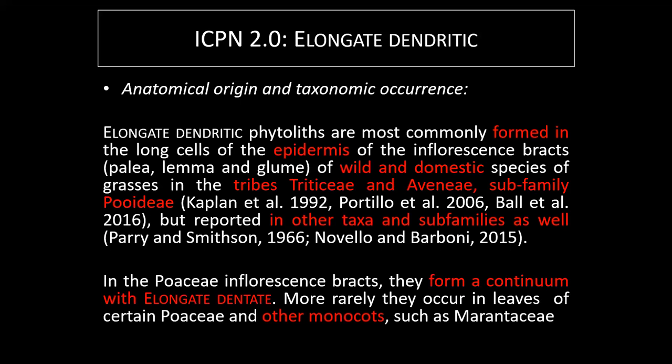The anatomical origin and taxonomic occurrence sections stress a few aspects: where the morphotype is formed, and in which taxa — including wild and domesticated species — it is found. It is reported for the subfamily Pooideae, tribe Avenae, and can also be found in other taxa and subfamilies. We also stress that elongate dendritic within the Pooideae forms a morphological continuum with elongate dentate and sinuate morphotypes. Some other plant families also produce elongate dendritic morphotypes.